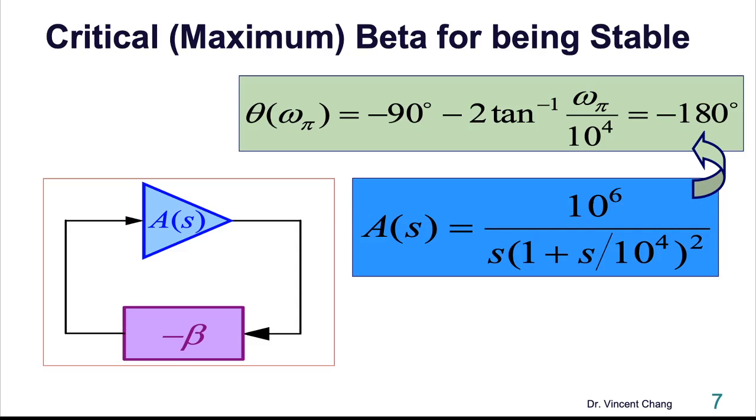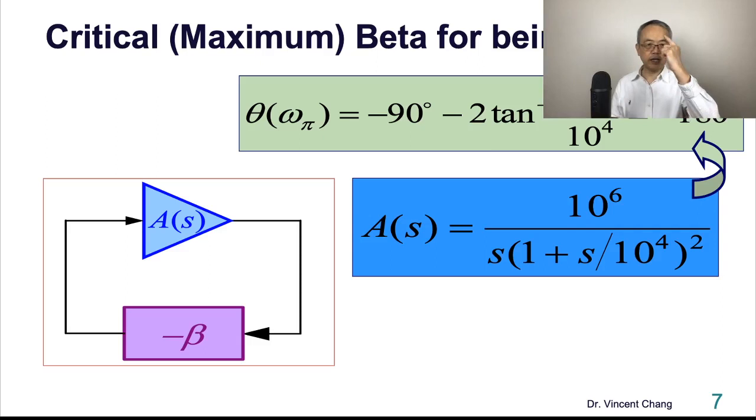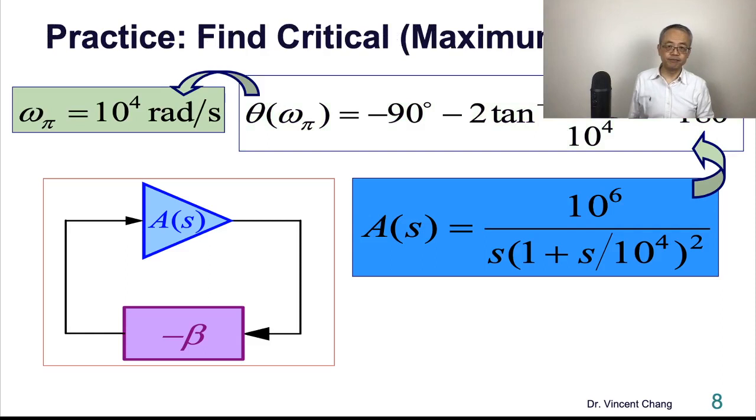So 90, 180. The second term in the equation should be 90. So the arc tangent term should be 45. Arc tangent what equals 45 degrees? Arc tangent one. So arc tangent one, then omega_pi equals 10 to the fourth power. Arc tangent one equals 45 degrees.